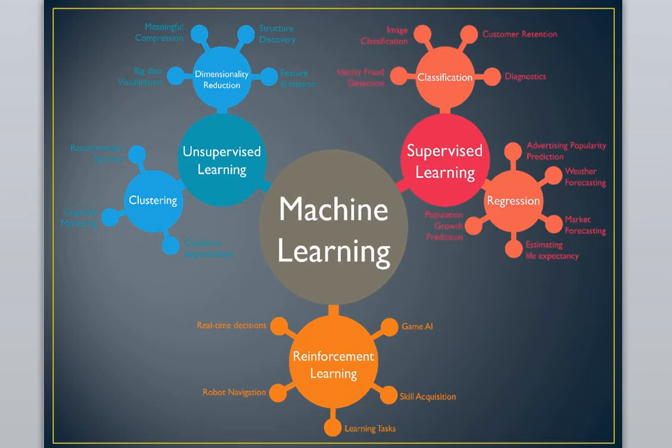We can make machines learn the human behavior or human intelligence through three different things. The first is supervised learning, the second is unsupervised learning, and the third is reinforcement learning.